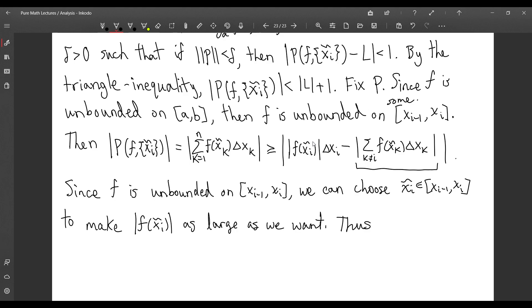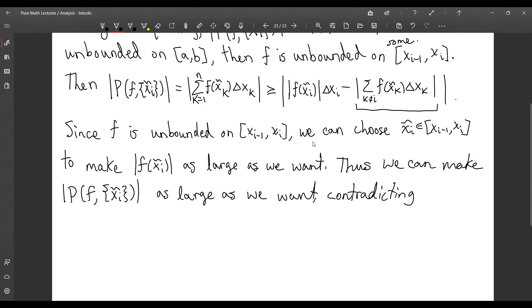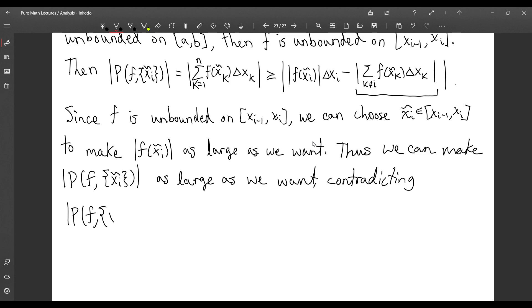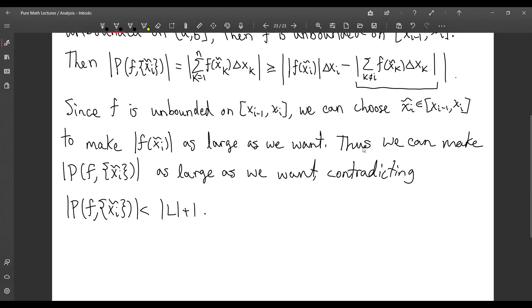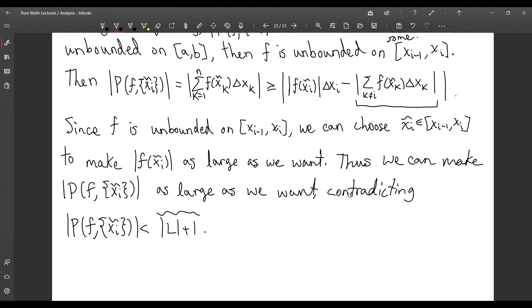Thus we can make the absolute value of our Riemann sum as large as we want. This contradicts the inequality that our Riemann sum is ultimately bounded by the absolute value of the Riemann integral plus 1, which was our value of epsilon. This doesn't change, so we can't possibly make this value as big as we want. That's our contradiction.